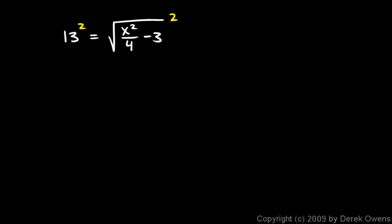13 squared on the left is 169. On the right, the square gets rid of the radical, and I have x squared over 4 plus 3. Actually, hold on here. In the printed notes, if you're looking at the page, that's supposed to be a plus 3 right there. I'm going to change the problem. That's a plus 3 right there, which is going to give me a plus 3 right here. This was the problem I intended to solve. Let's continue.